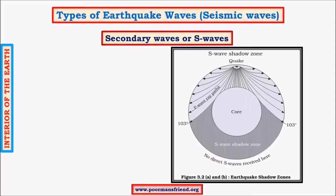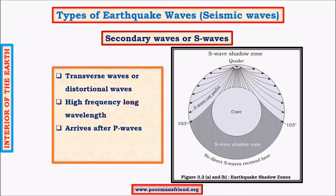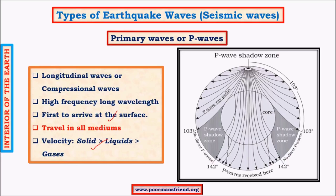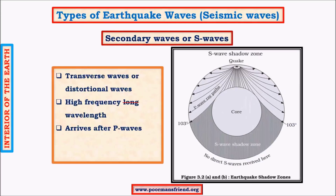Secondary waves, or S-waves, are also called transverse or distortional waves. They are high-frequency, short-wavelength waves and arrive after primary waves. The most important property of secondary waves is that they cannot travel through liquids and gases — they travel only through solids. This property is critically important for understanding earth's internal structure, as we will see when studying shadow zones.